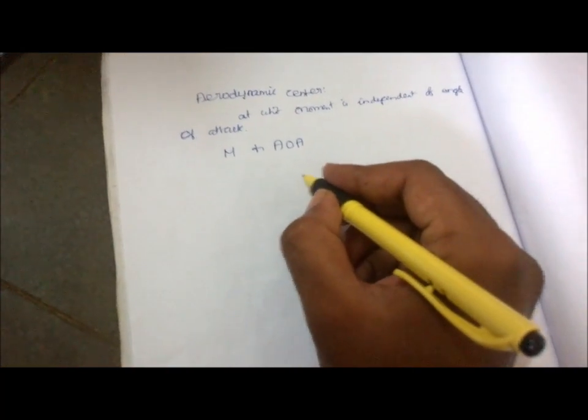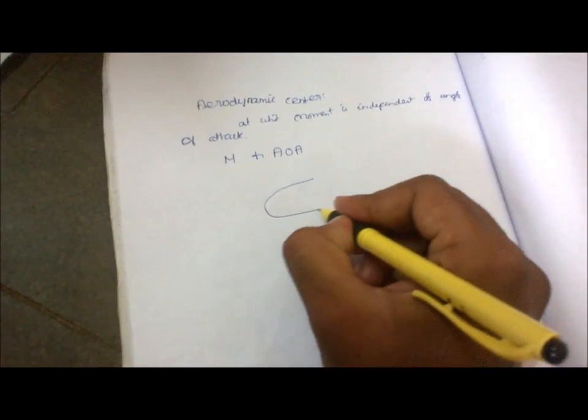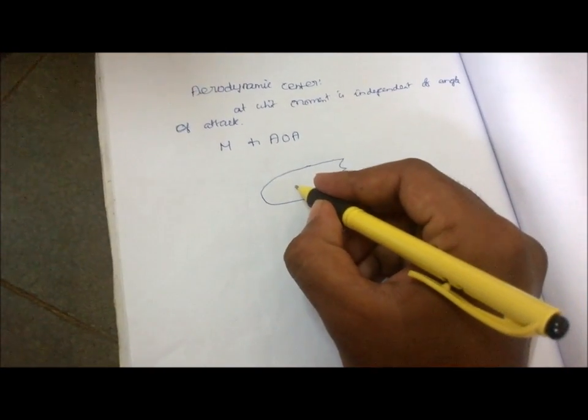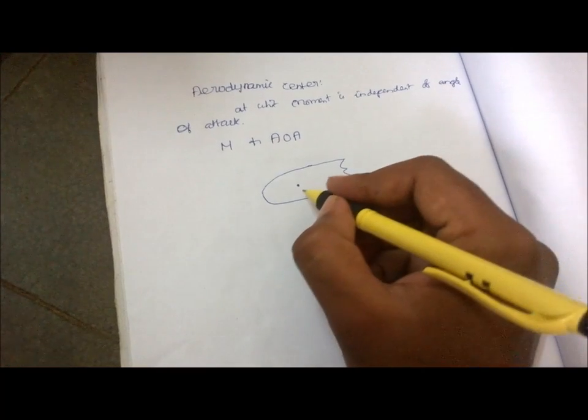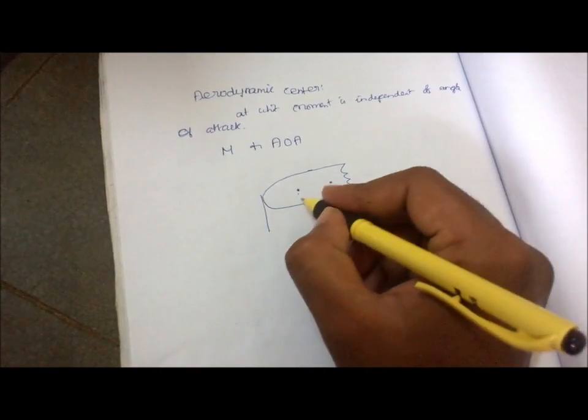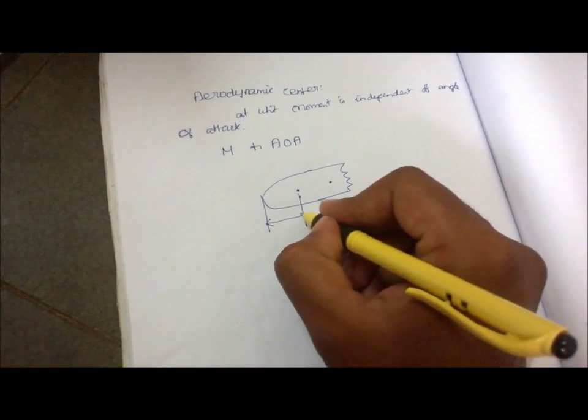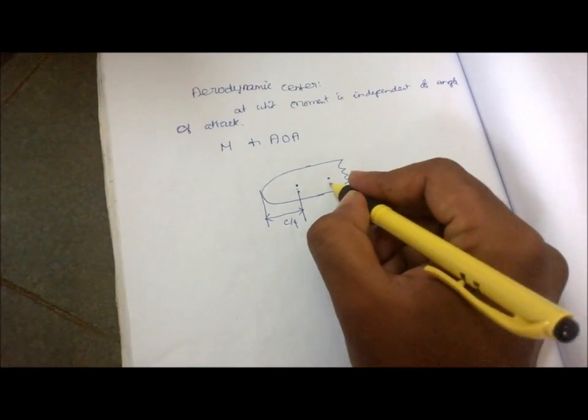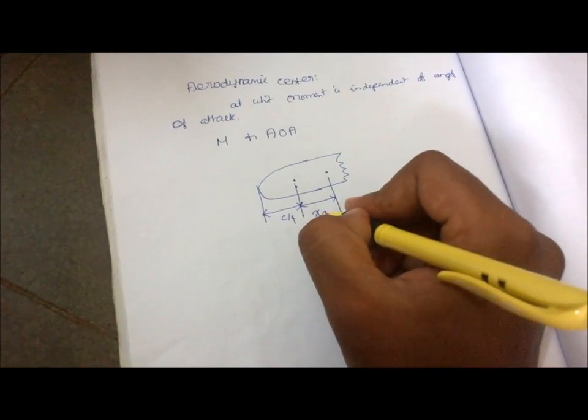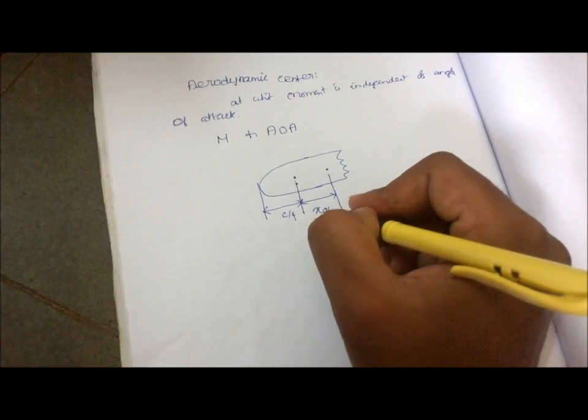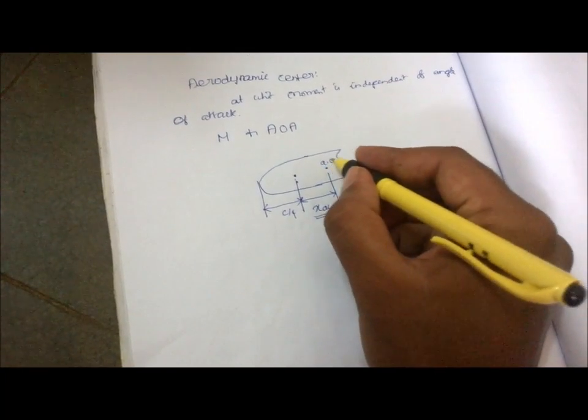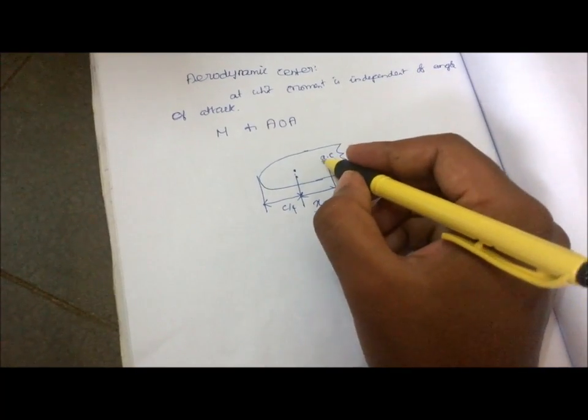Let us take the front part of an airfoil. Let us take two points: one is a quarter chord point, this one is an aerodynamic center. Let us name it as X_AC, the distance is mentioned as X_AC. This one is an aerodynamic center mentioned as AC.